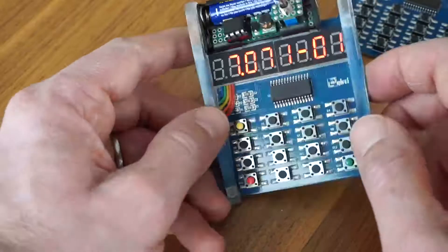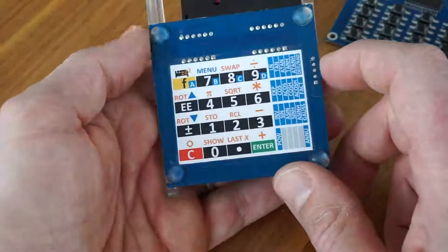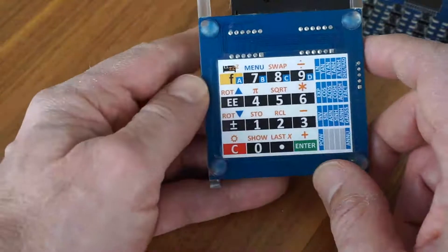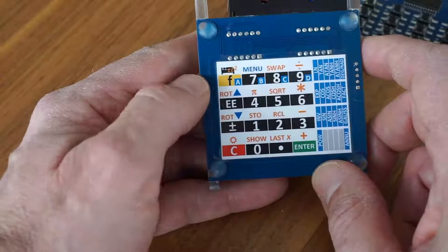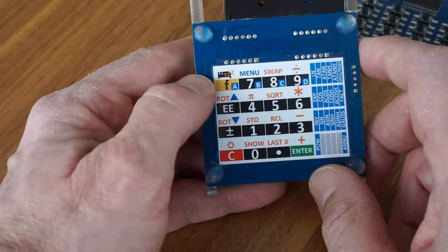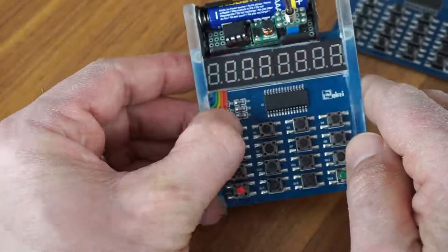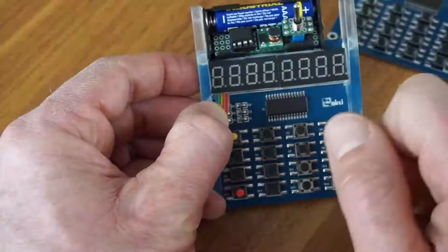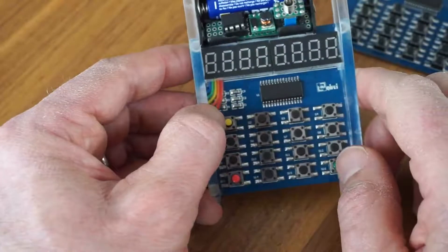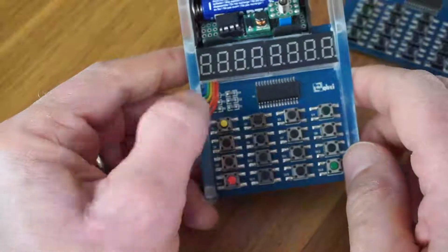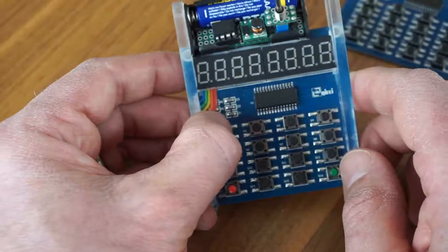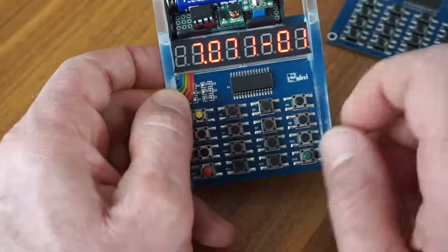A special function to save power: you can type two times the function key which switches the display off, but the calculator is running on. So if you type the function key a third time, you can go on with the calculations.